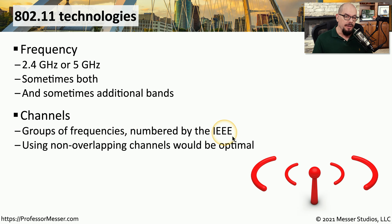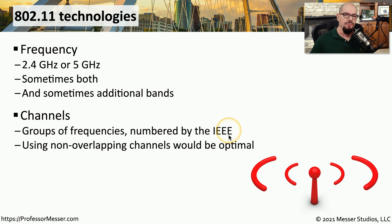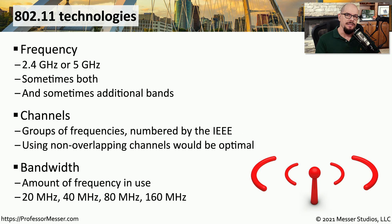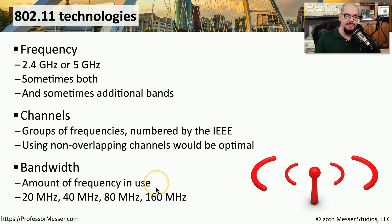These frequency groups are numbered and assigned by the IEEE. So if you're using a 2.4 gigahertz network and you're referring to channel 6, it's always going to be the same channel 6 across all IEEE 802.11 2.4 gigahertz devices. Some of these channels overlap with each other, and that's why we'll often say it's best to use frequencies on multiple access points that do not overlap or conflict with each other. These ranges of frequencies are dependent on the channel width, sometimes referred to as the bandwidth.